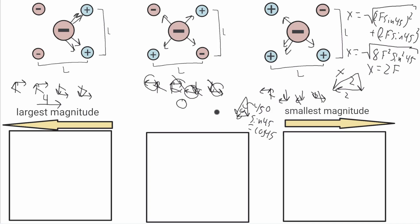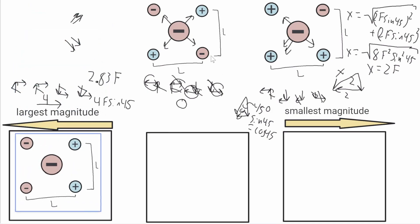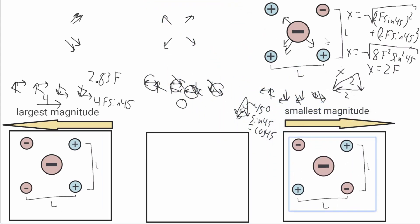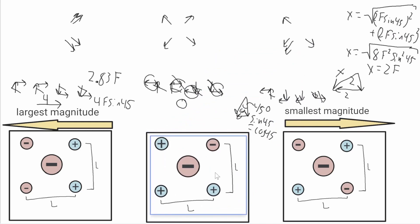Now comparing: is 2f greater than the first case, which was 4f·sin45, equal to 2.83f? No — 2.83f is greater. So we can now rank these correctly: the first configuration on the left has the greatest magnitude at 2.83f, the right configuration is in the middle at 2f, and the second configuration has a net force of zero, giving it the smallest magnitude. That is your final answer.